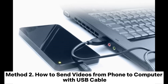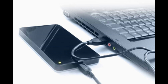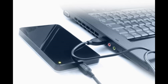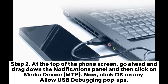Method 2: How to send videos from phone to computer with a USB cable. Step 1: Connect your Android device to a PC or laptop. Step 2: At the top of the phone screen, drag down the notifications panel and then click on Media Device MTP. Click OK on any Allow USB Debugging pop-ups.